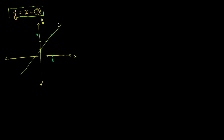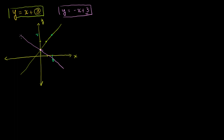Now let's say we have another equation: y is equal to negative x plus 3, and we want to graph all of the x and y pairs that satisfy this equation. This has a y-intercept also at 3, but its slope is negative 1. So every time you move to the right 1, you're going to move down 1. So that's what this equation will look like — every point on this line represents an x and y pair that satisfies this equation. Now what if I were to ask you, is there an x and y pair that satisfies both of these equations?